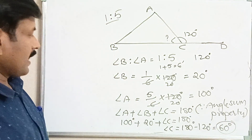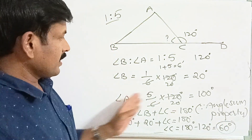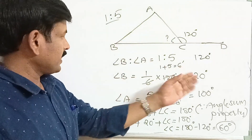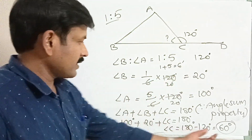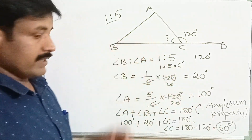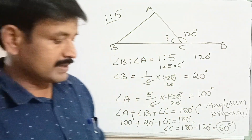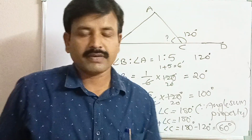Here, angle A is 100 degrees, angle B is 20 degrees, and angle C is 60 degrees. These are the three angles of the triangle.